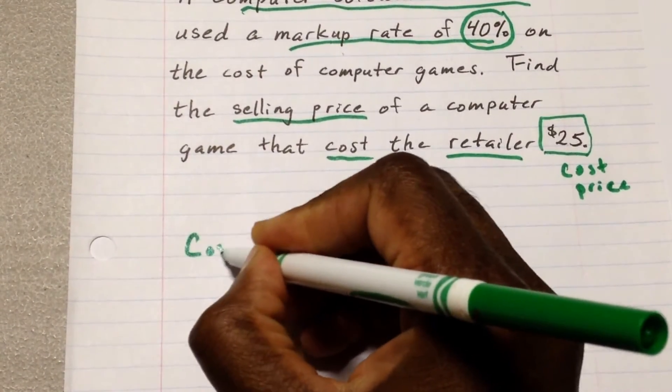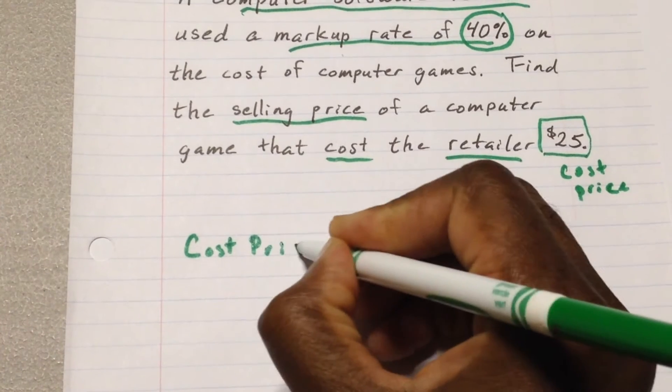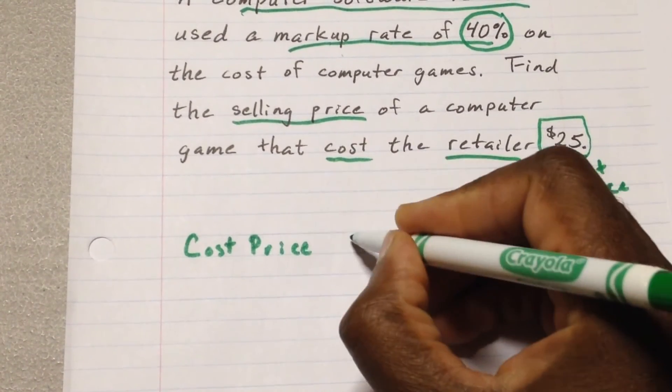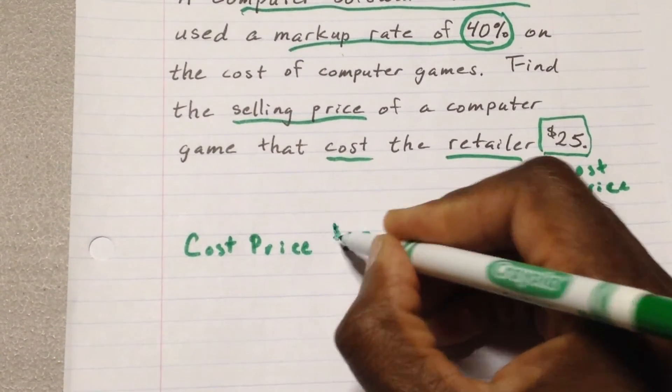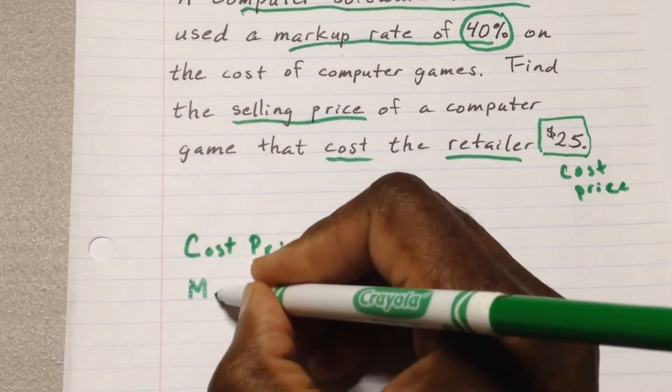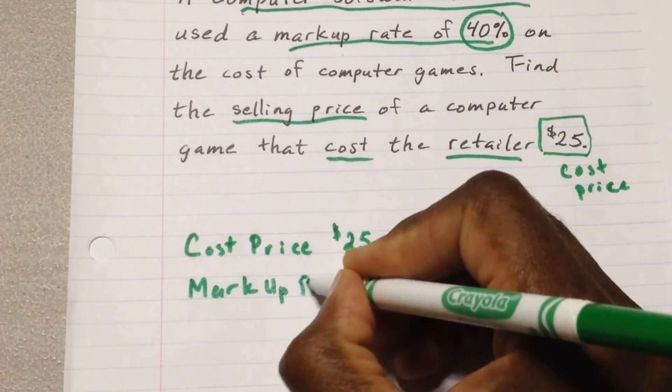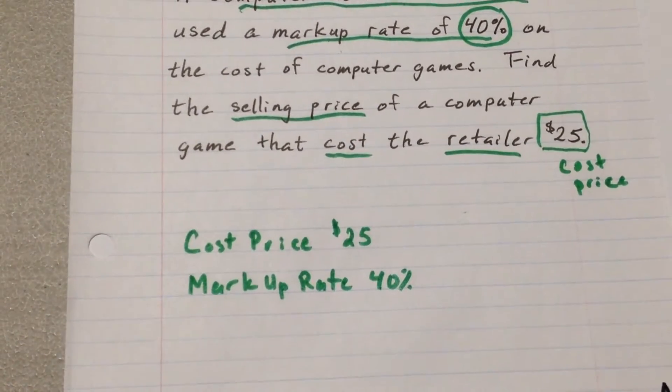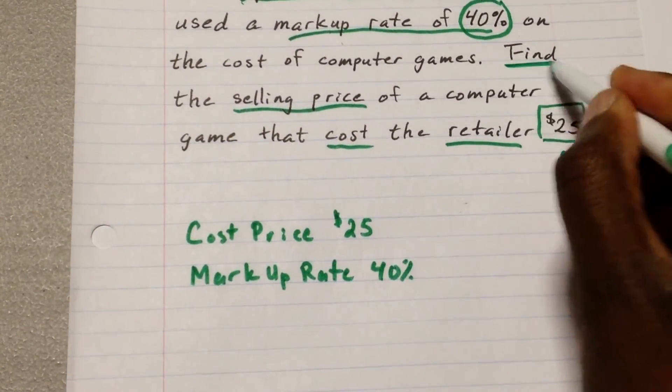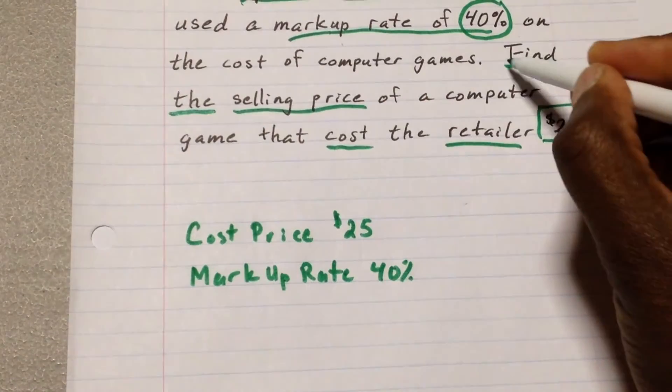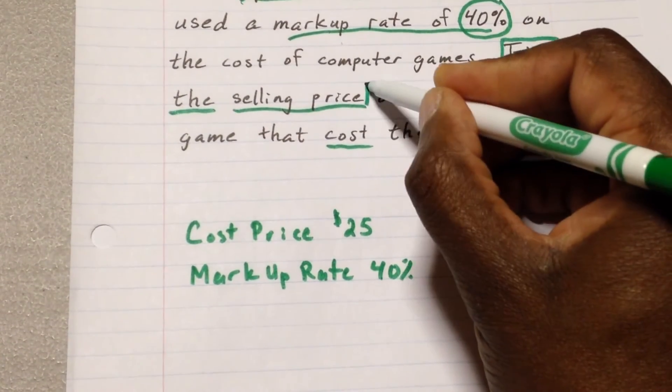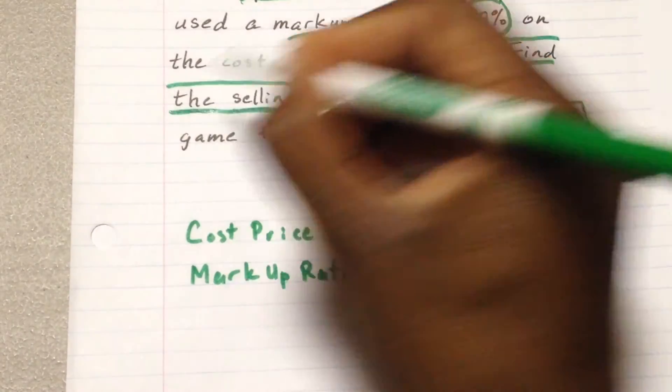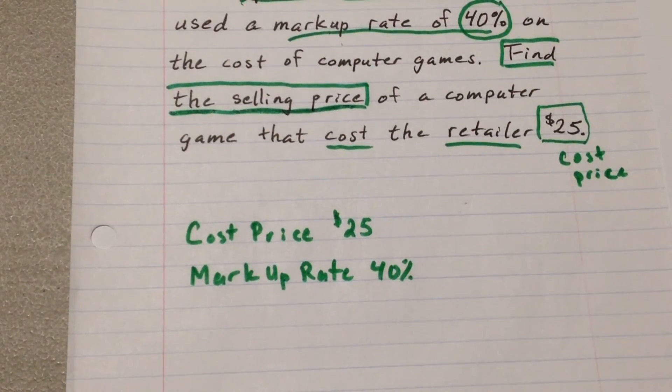Our cost price is $25. And our markup rate is 40%. So let's find, it says to find the selling price. So this is what we're here to do. We're here to find out what the selling price is. Okay, let's do that. Let's find the selling price.